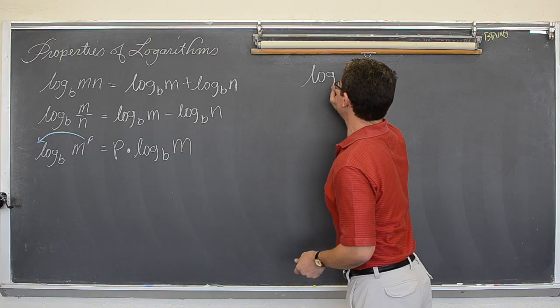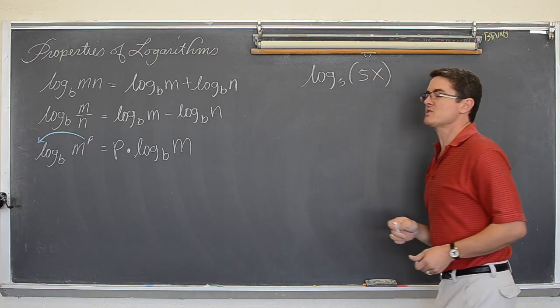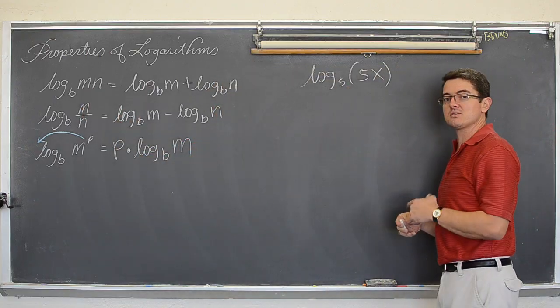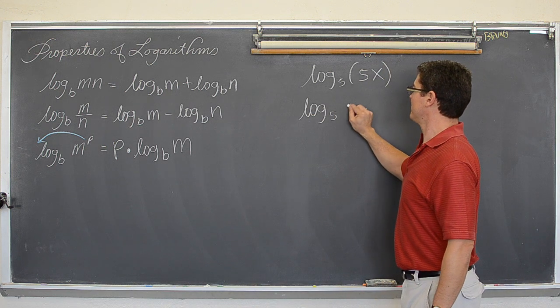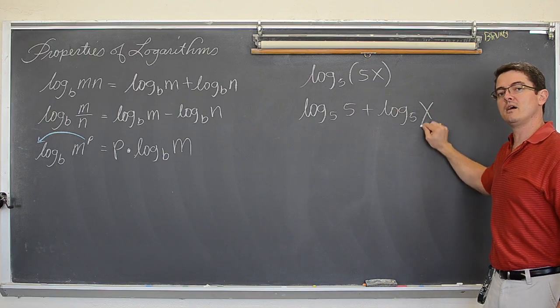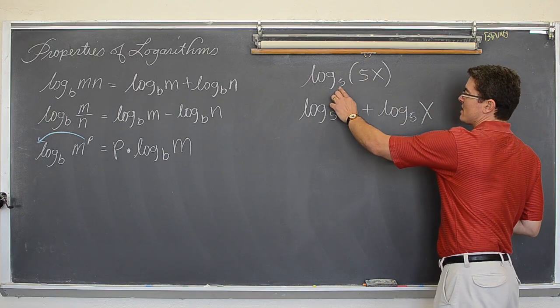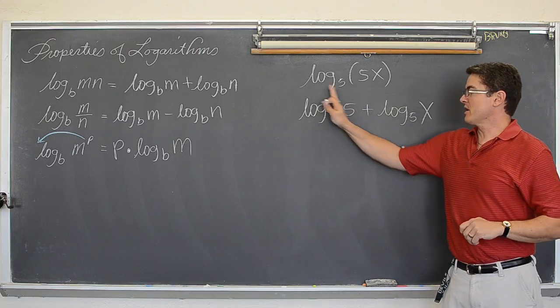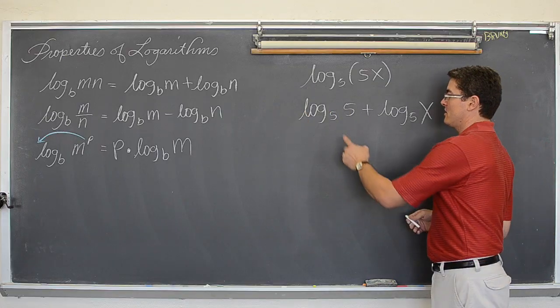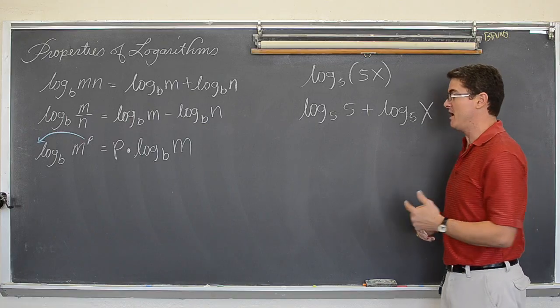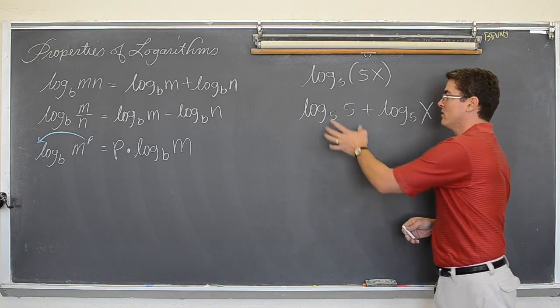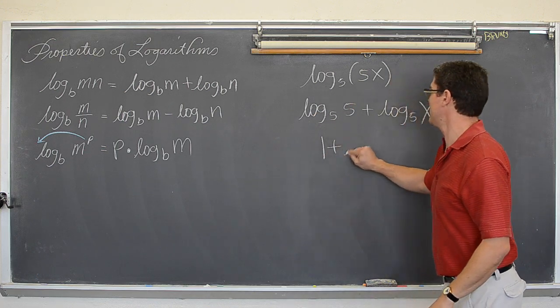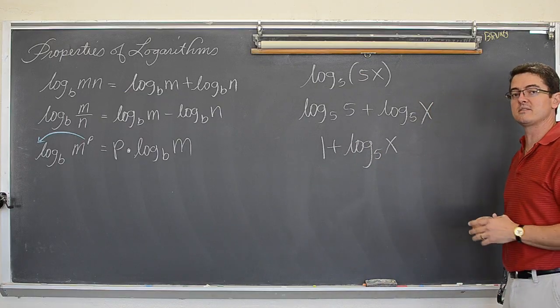So, our first one is going to be log base five of five x. So, it is a log of two items being multiplied together. Well, when you take the log of two items being multiplied together, common base, you can expand that by doing log base five of five plus log base five of x. Multiplication, common base, you add those exponents, you add those logarithms when you pull it apart. Now, occasionally we are going to have some parts of these expressions that can be simplified, and five to what power equals five? When you log five using the base of five, and again, when you log a number you get an exponent. So, five to what exponent gives you five? Well, one. So, it is one plus log base five of x. So, we got done expanding that one.